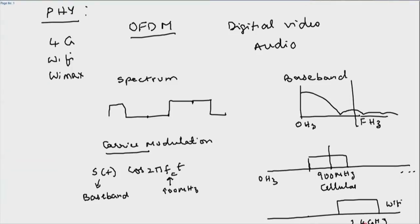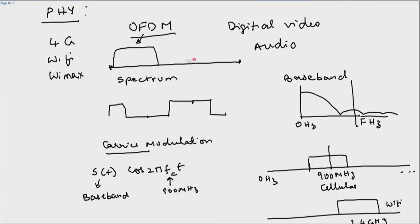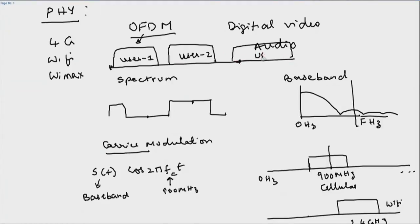Now let's get back to OFDM. The 'FDM' in OFDM stands for Frequency Division Multiplexing. In regular FDM, you take the entire spectrum at your disposal and assign different chunks to different users — user 1 gets one chunk, user 2 gets another, and so on. You are dividing the spectrum into non-overlapping chunks. This is frequency division multiplexing, not yet OFDM.